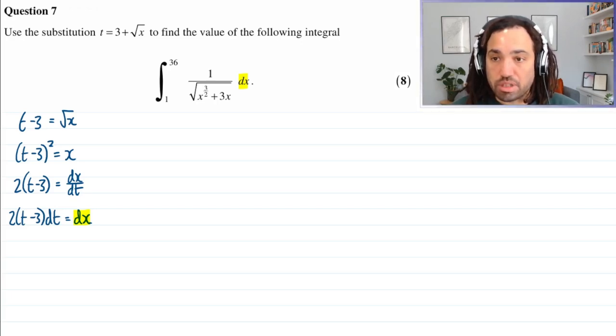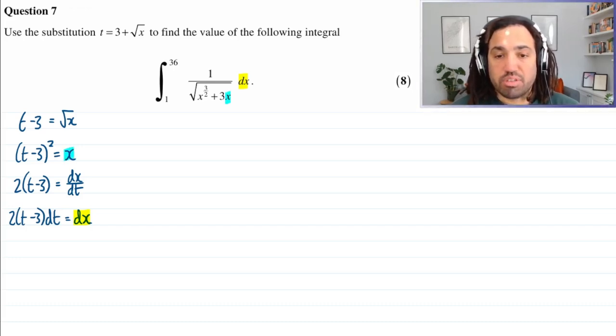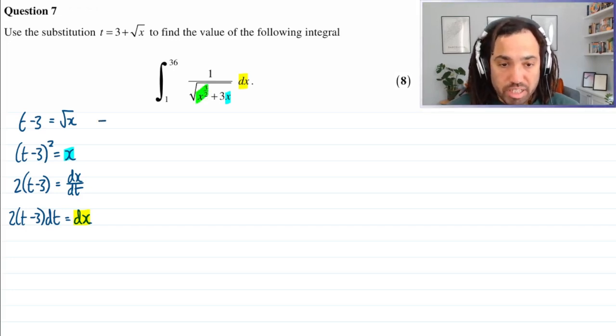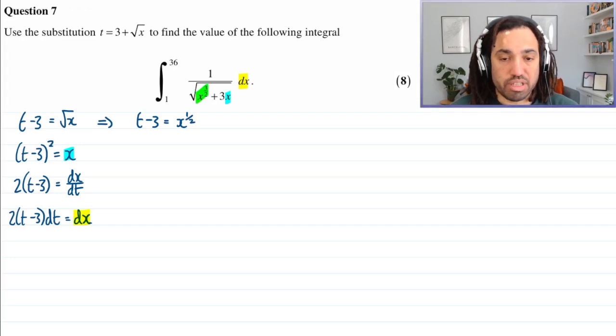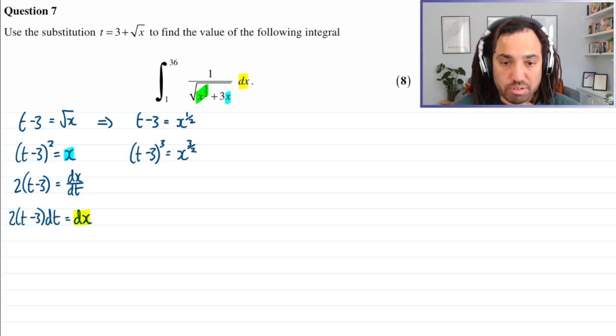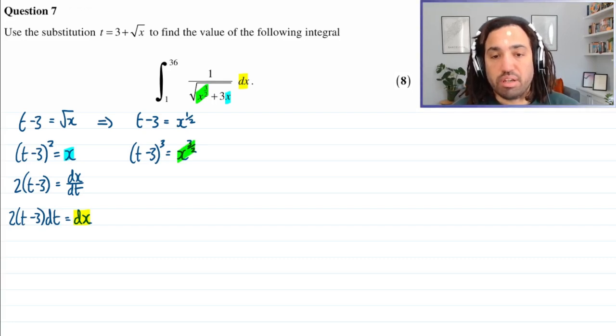Okay, so that is good, because that is going to go in there. Now we need to also substitute in for x, but that's good, we've got that expression already. So what we need now is we need the expression for x to the 3 over 2. So looking at this one, this is t minus 3 is equal to x to the half, because the square root is the same as the power of a half. And then if we cube both sides, this gives us x to the power of 3 over 2, which is perfect, because that's the green part we want to sub in. Okay, we're getting there.